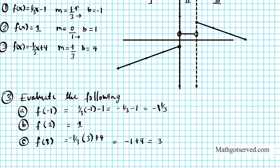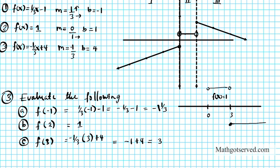Another way to approach this is to draw a number line with your partitions at zero and three. For the middle section between zero and three, f(x) equals one. From three all the way out to the right, use f(x) equals negative one-third x plus four. From zero all the way down to the left, use f(x) equals one-third x minus one. This tells you: if you're less than zero use this function; if you're between zero and three, excluding those two endpoints, use this function; and if you're bigger than three, use this function.